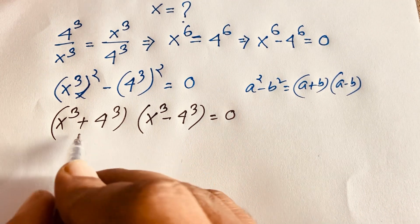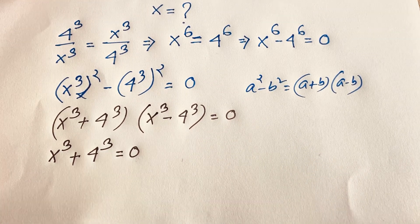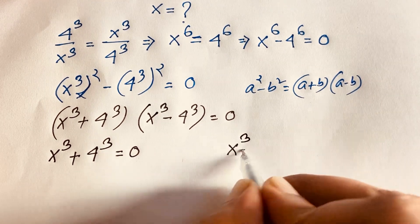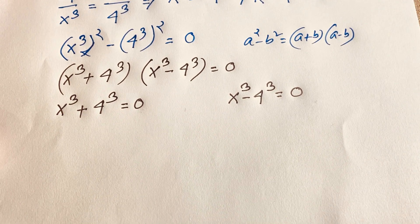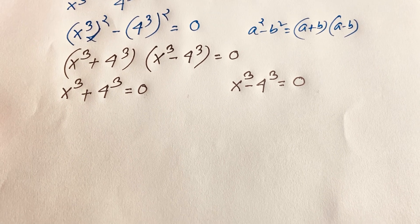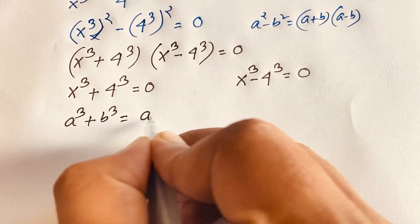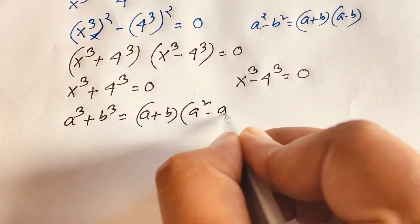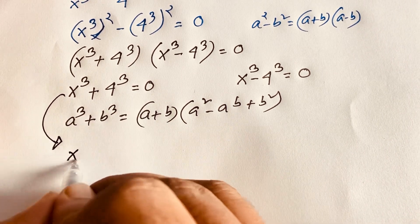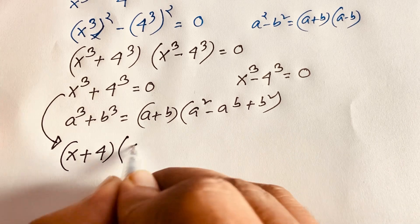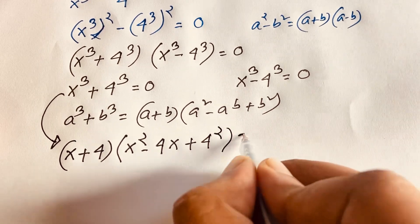We have two factors. Our first case: x to the power 3 plus 4 to the power 3 equals 0. Our second case: x to the power 3 minus 4 to the power 3 equals 0. For Case 1, we apply the identity a cubed plus b cubed equals a plus b times a squared minus ab plus b squared. So it becomes x plus 4, times x squared minus 4x plus 16, equals 0.